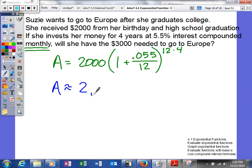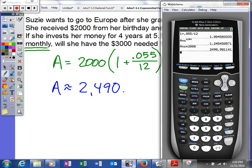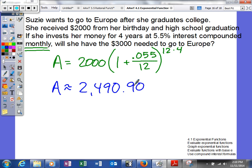So $2,490.90. So unfortunately for Susie, she would not have enough money to be able to go on her trip and pay for the whole thing. So she may have to wait and get a little college funds, or she might just have to be a little bit more frugal in her spending.